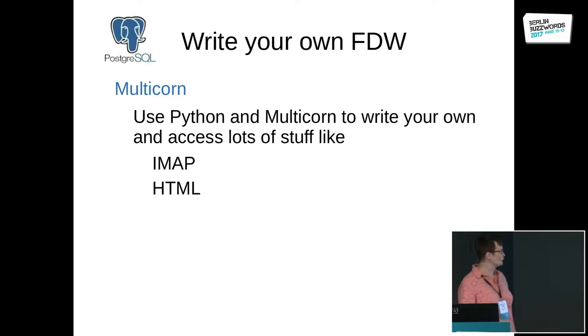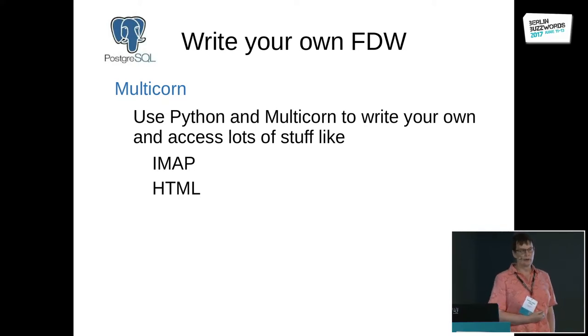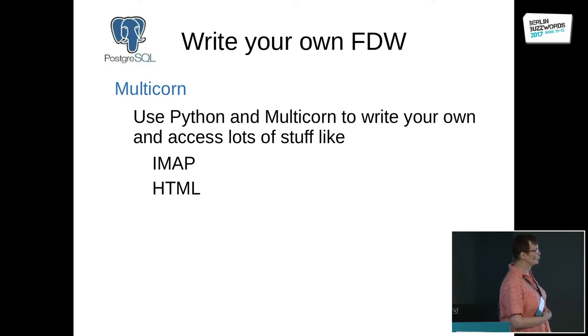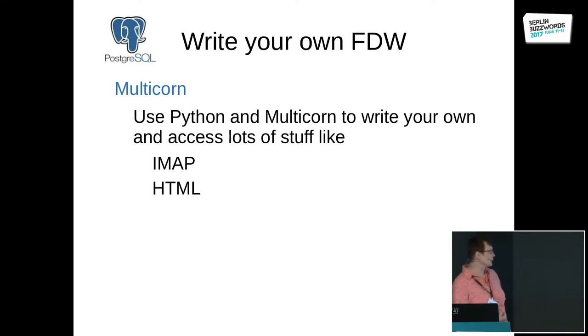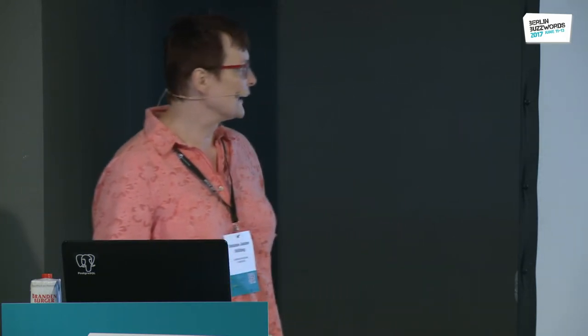Multicorn already has two implementations included. You can use IMAP folders — simply query IMAP folders with SQL commands, use regular expressions inside your SQL command, and join that to every other data available in your database. It also handles HTML, so you can get HTML sources and query them with SQL. That runs out of the box and also includes Atom and RSS feeds, which you can query with SQL. I'll show you later how this works.